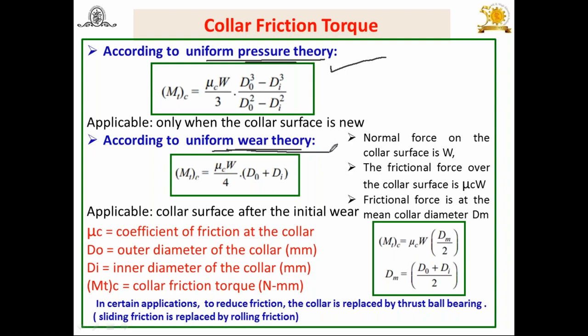If it is not mentioned which theory to use while designing the power screw, always go for uniform wear theory. Uniform pressure theory is for newly designed elements, and uniform wear theory is for running conditions. If it is not mentioned, always prefer uniform wear theory.